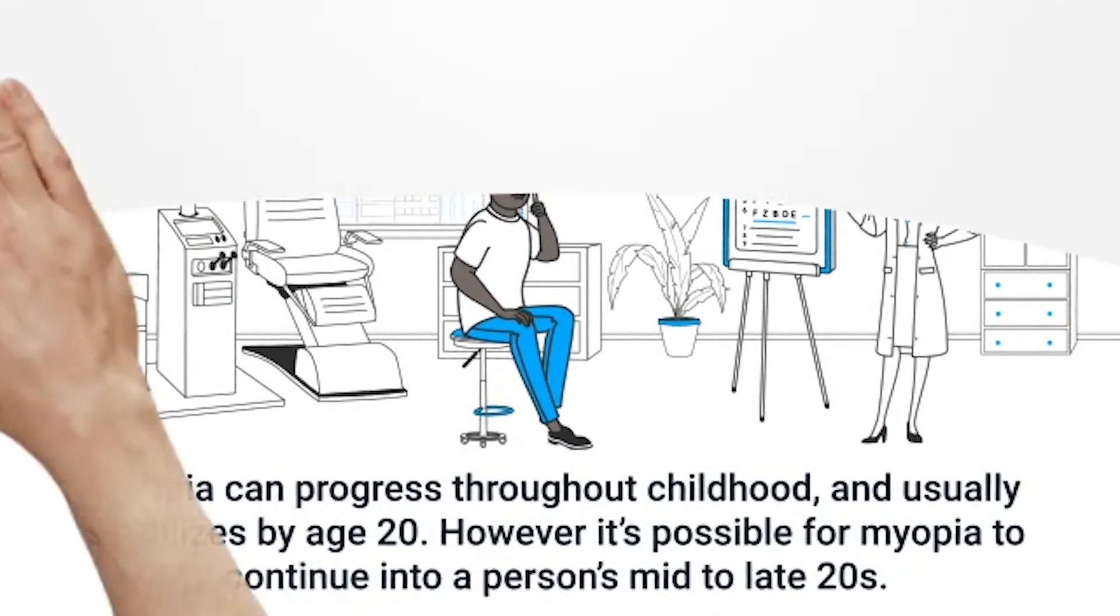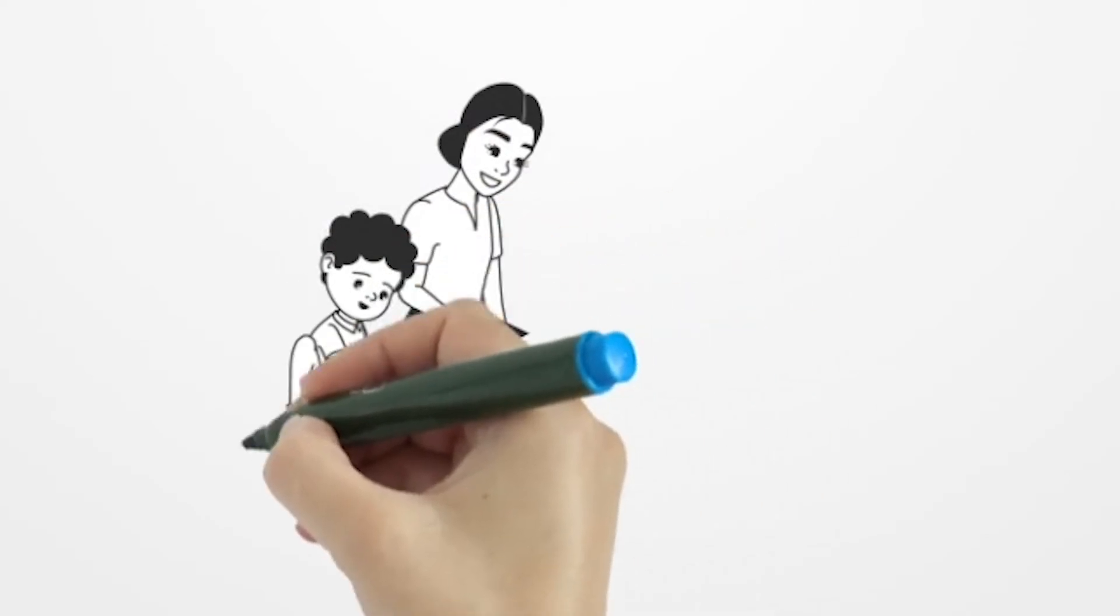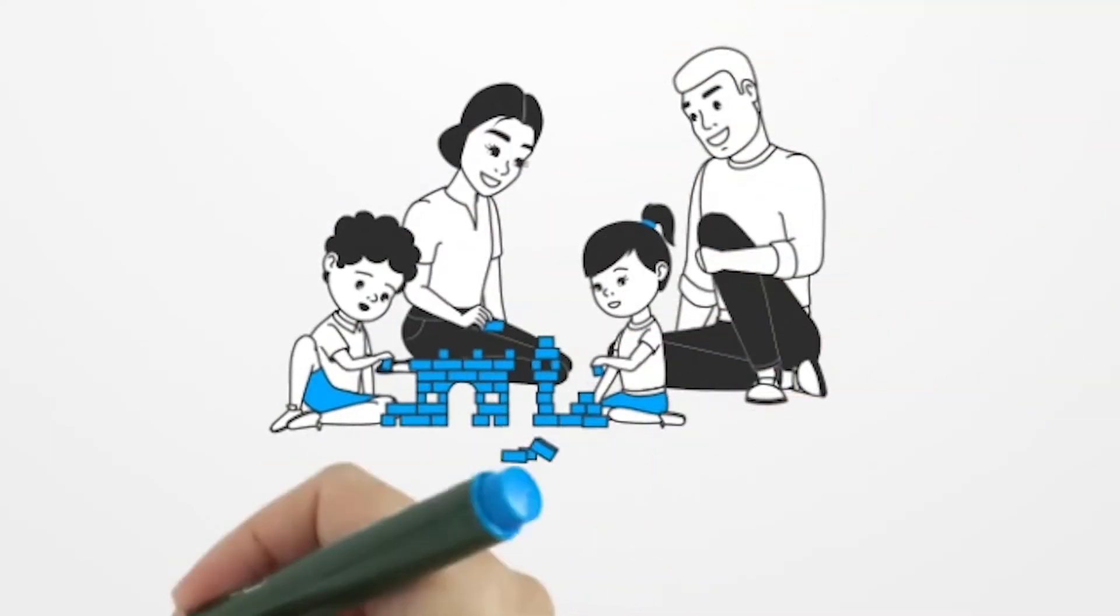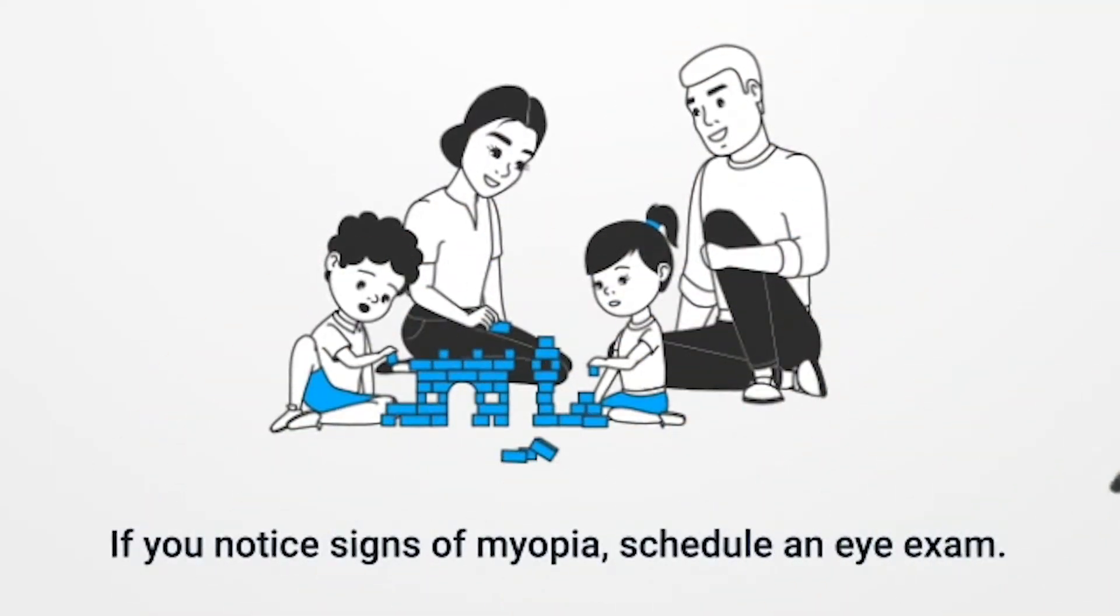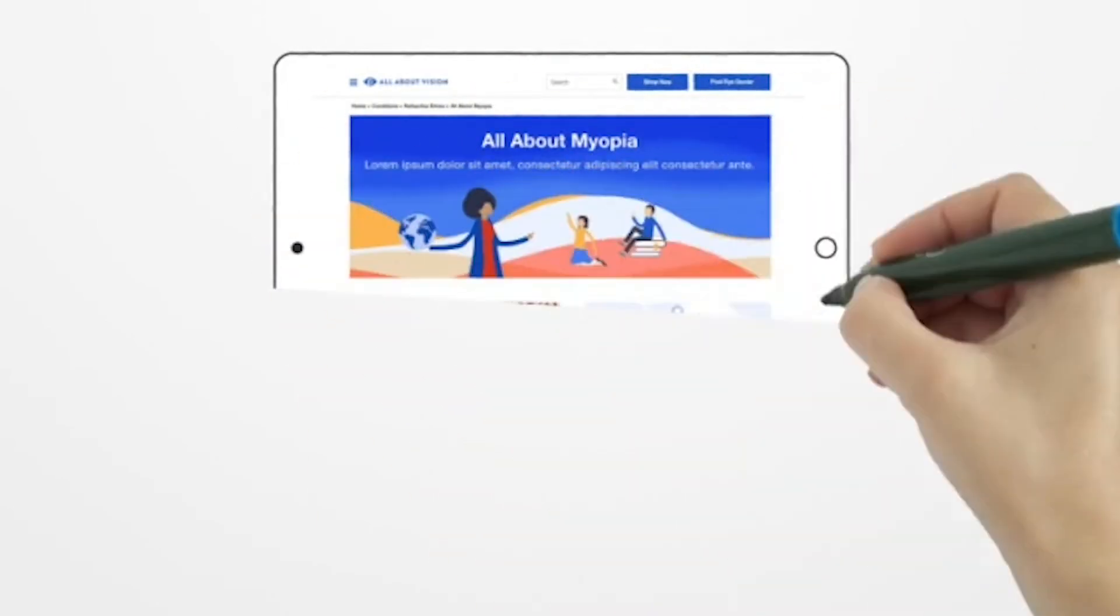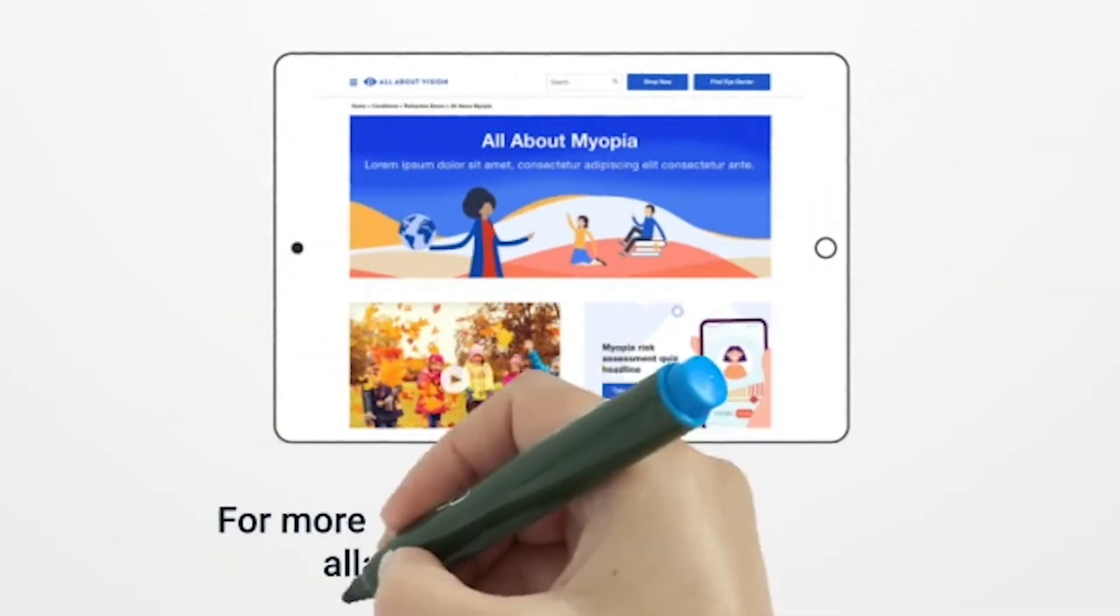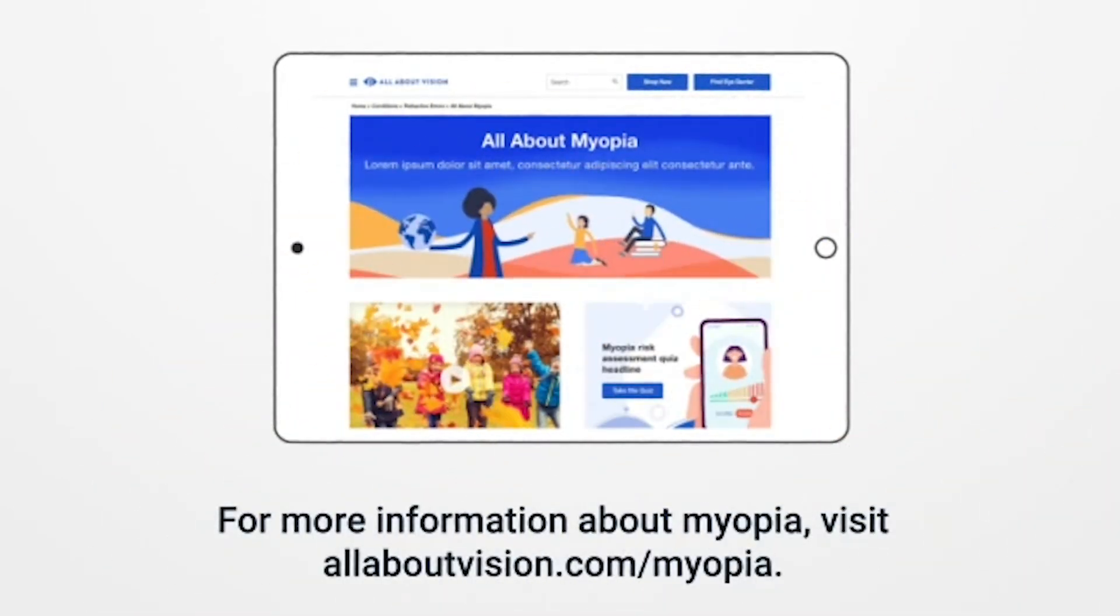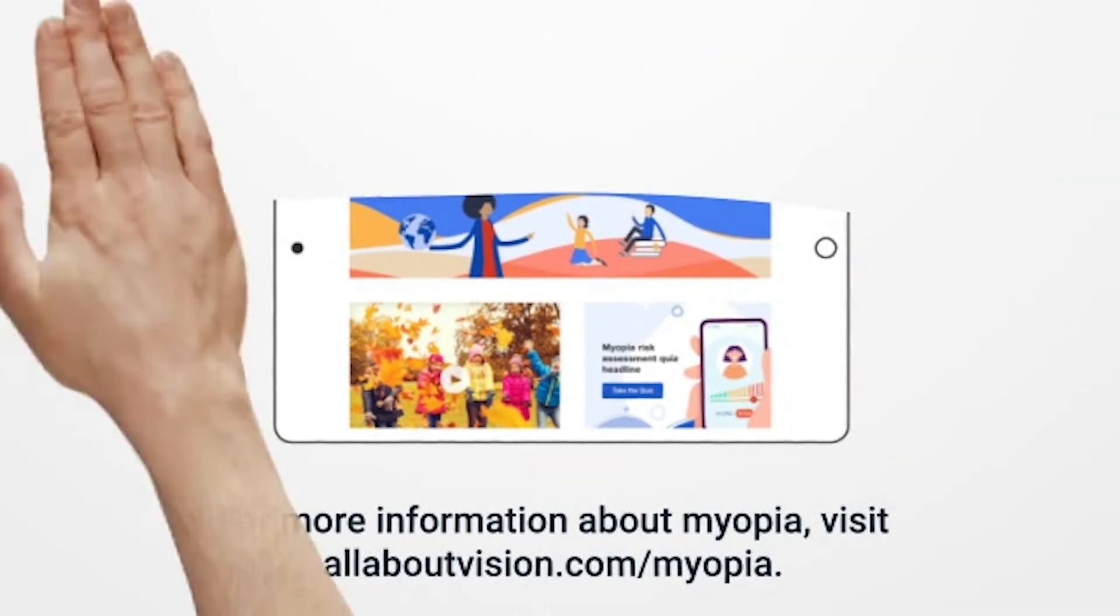Regular eye exams ensure your child's eyes and vision are healthy. If you notice any signs of myopia, schedule a comprehensive eye exam with an optometrist or ophthalmologist today. For more information about myopia, visit allaboutvision.com/myopia.